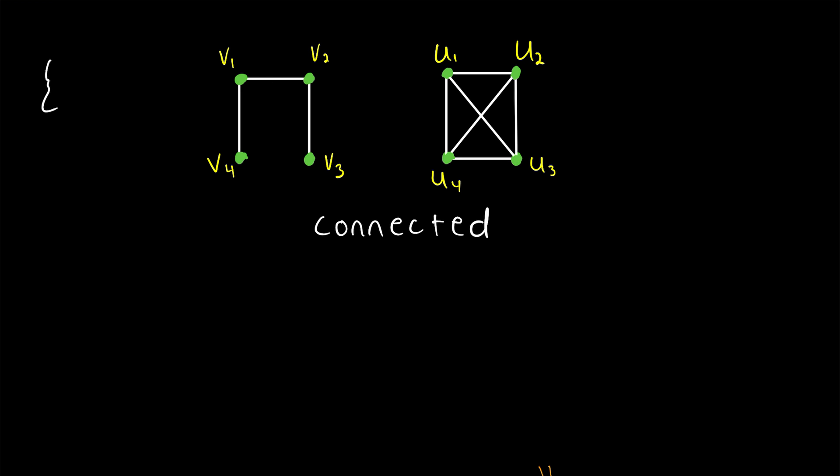This graph has two minimum vertex cuts, one that just contains the vertex V1, and then the other that contains the vertex V2. Since the cardinality of a minimum vertex cut of this graph is 1, suppose we call the graph H, Kappa of H, the vertex connectivity of H is equal to 1. This of course will be true of any graph with a cut vertex.